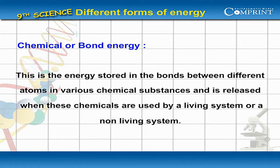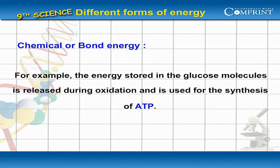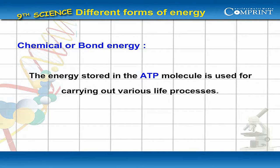Chemical or bond energy is the energy stored in the bonds between different atoms in various chemical substances, and is released when these chemicals are used by a living or non-living system. For example, the energy stored in glucose molecules is released during oxidation and is used for the synthesis of ATP.